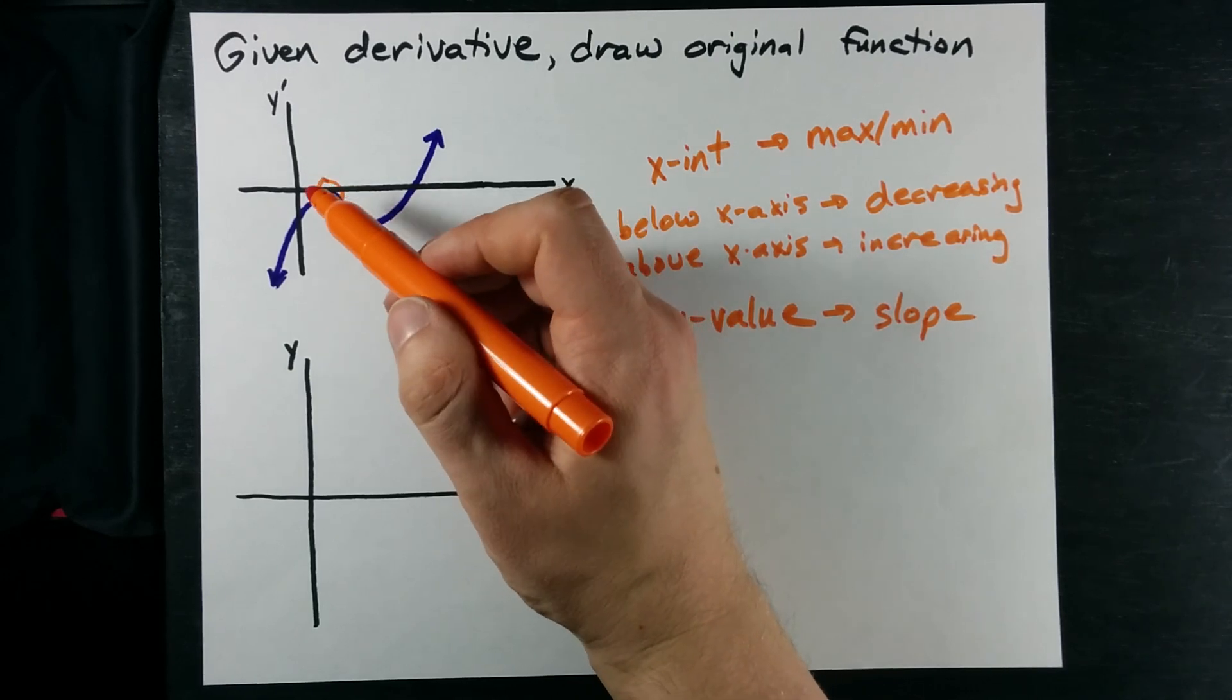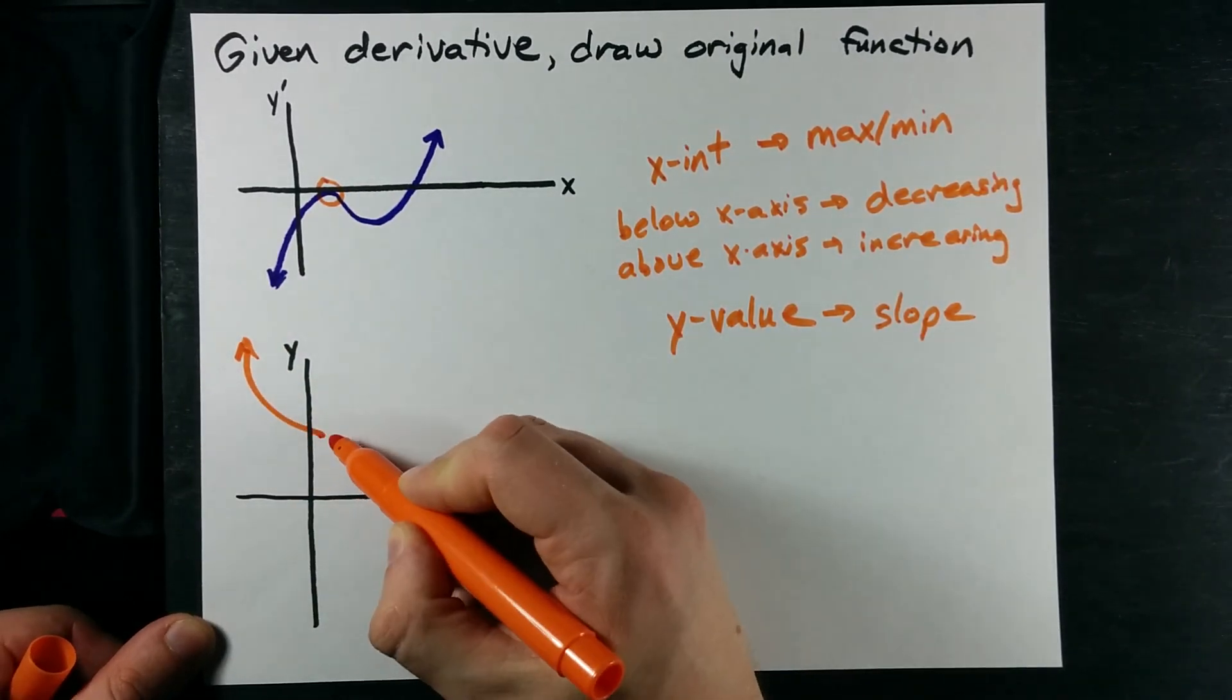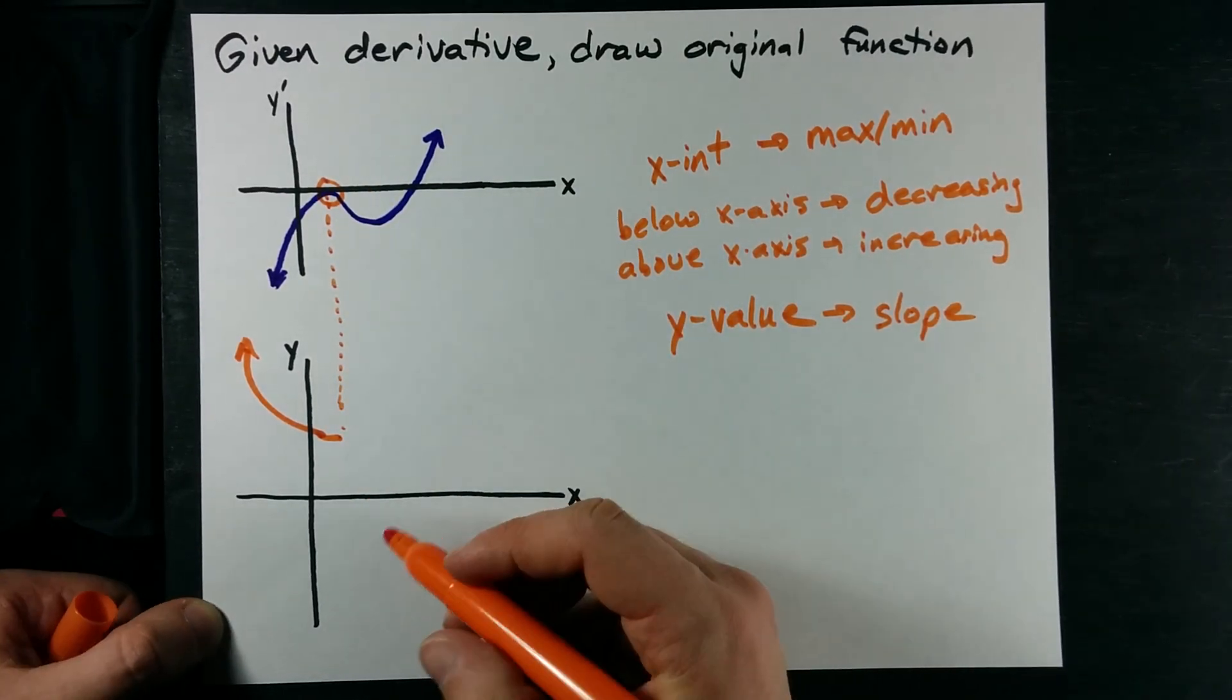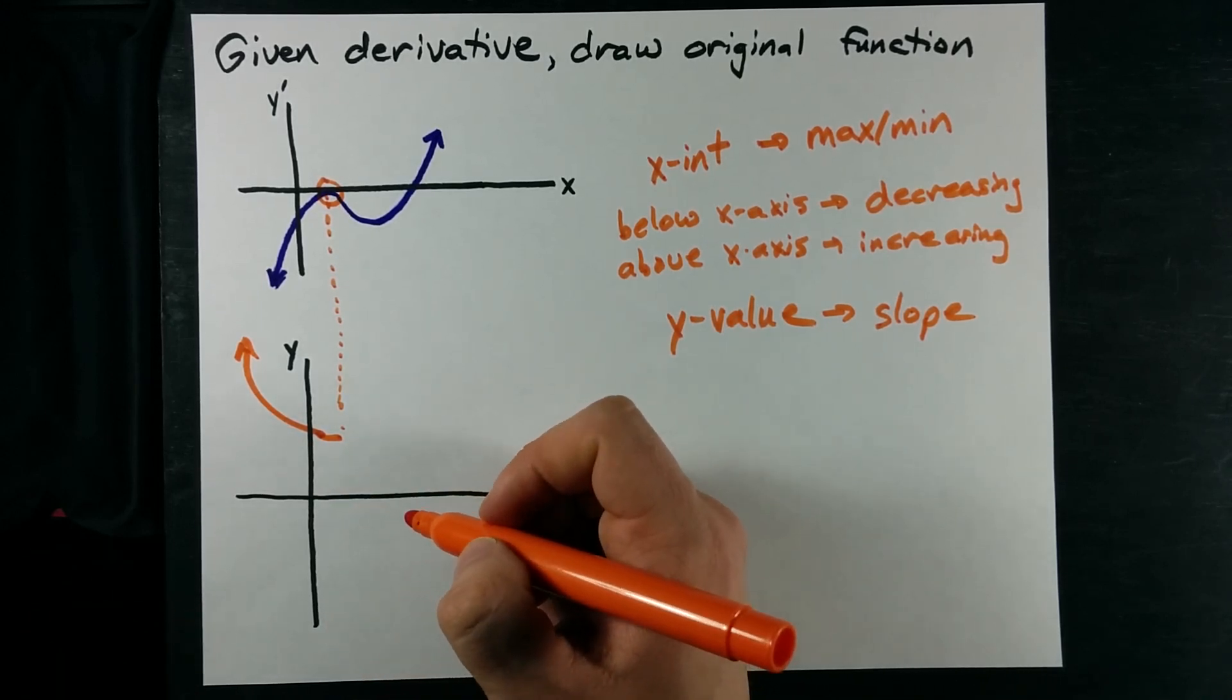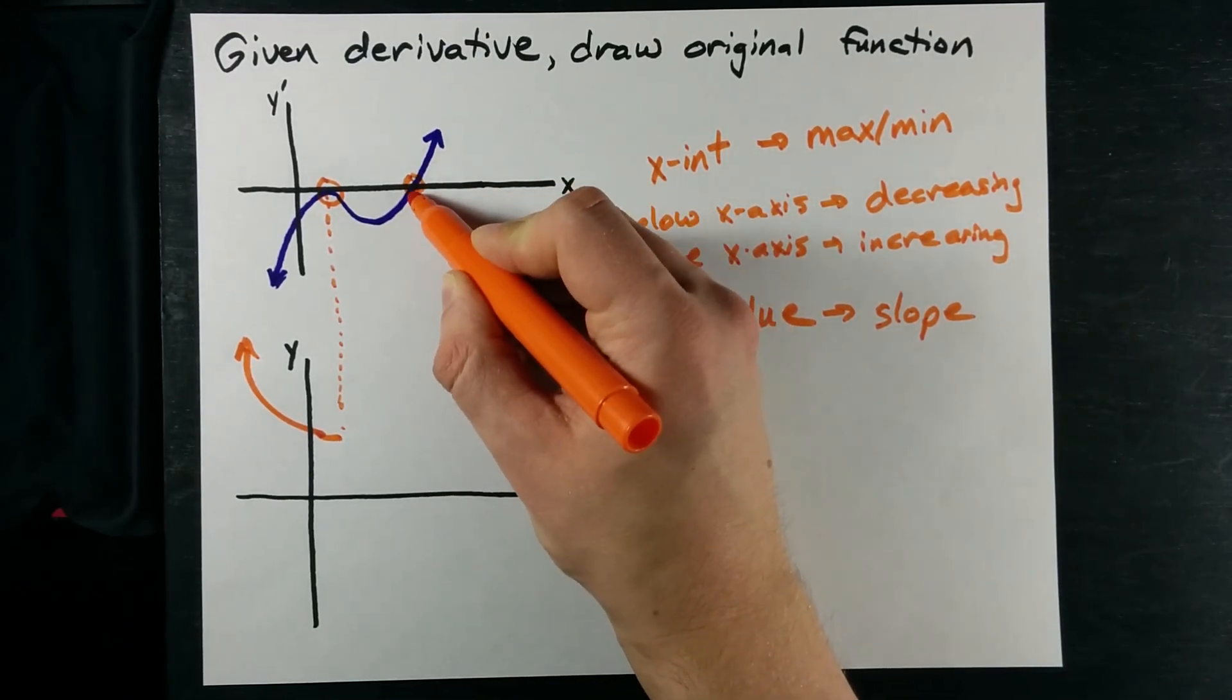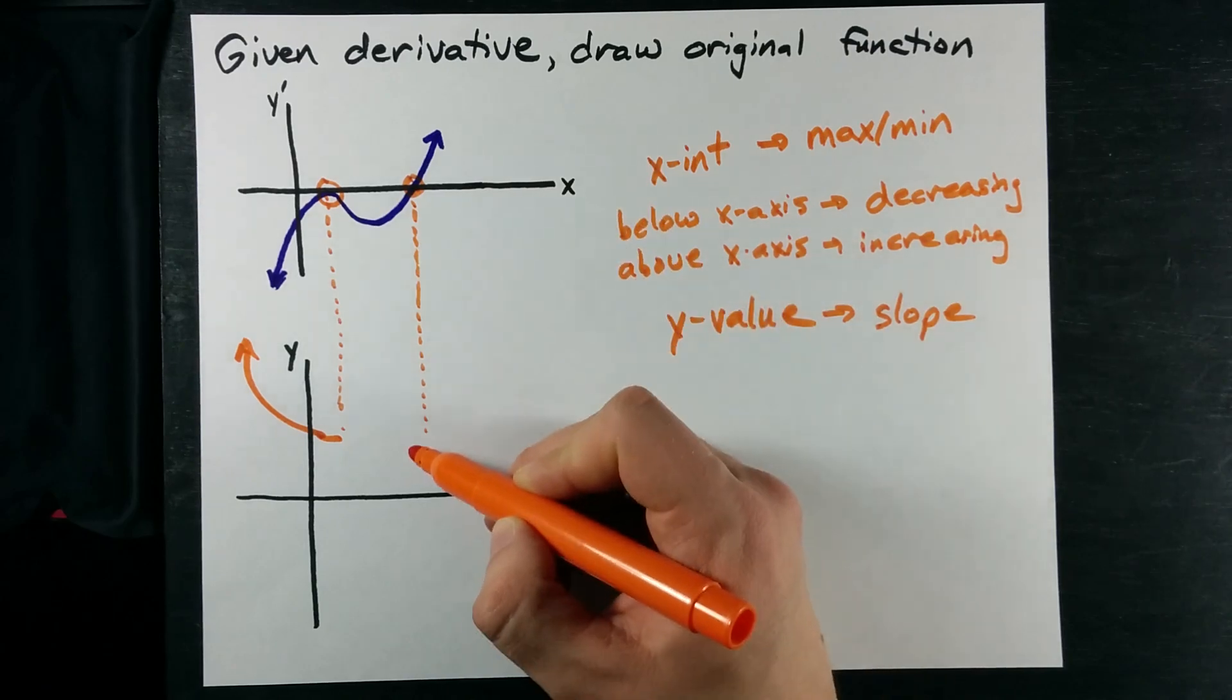That's actually a very special thing called a point of inflection. What this means is I'm decreasing until I get to that point, and I'm making sure that my x-values line up. The slope should be zero there. It should be flat. But then it continues to decrease.